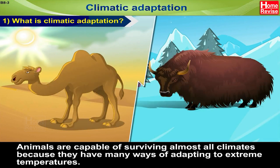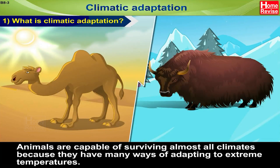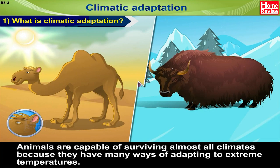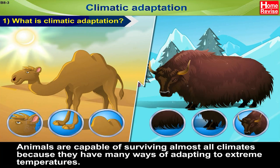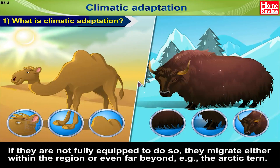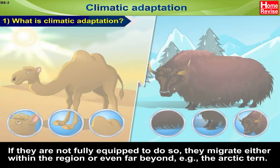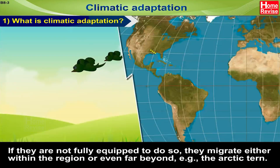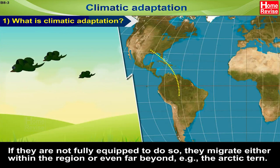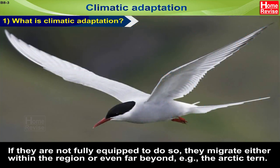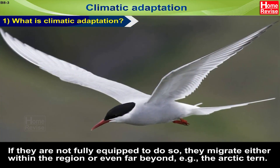Animals are capable of surviving almost all climates because they have many ways of adapting to extreme temperatures. If they are not fully equipped to do so, they migrate either within the region or even far beyond. One example is the Arctic Tern.